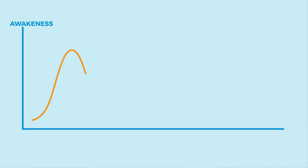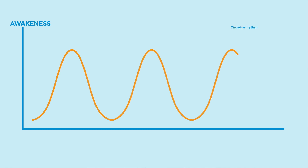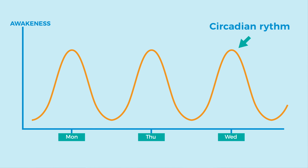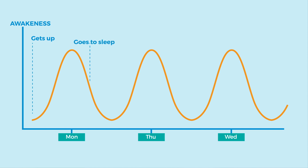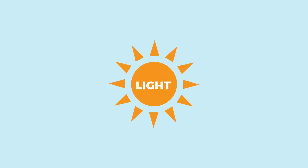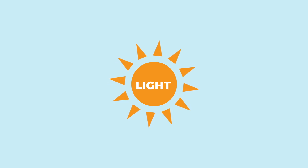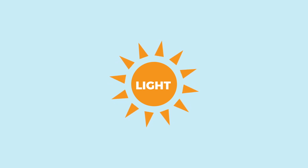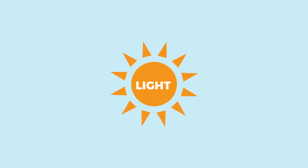Every human has a 24-hour internal clock called a circadian rhythm that ticks every day of your life. Here we see a regular profile where you get up and go to bed with the same pattern throughout the week. Light, especially sunlight, has been shown to be the most important factor for adjusting the brain's built-in clock.